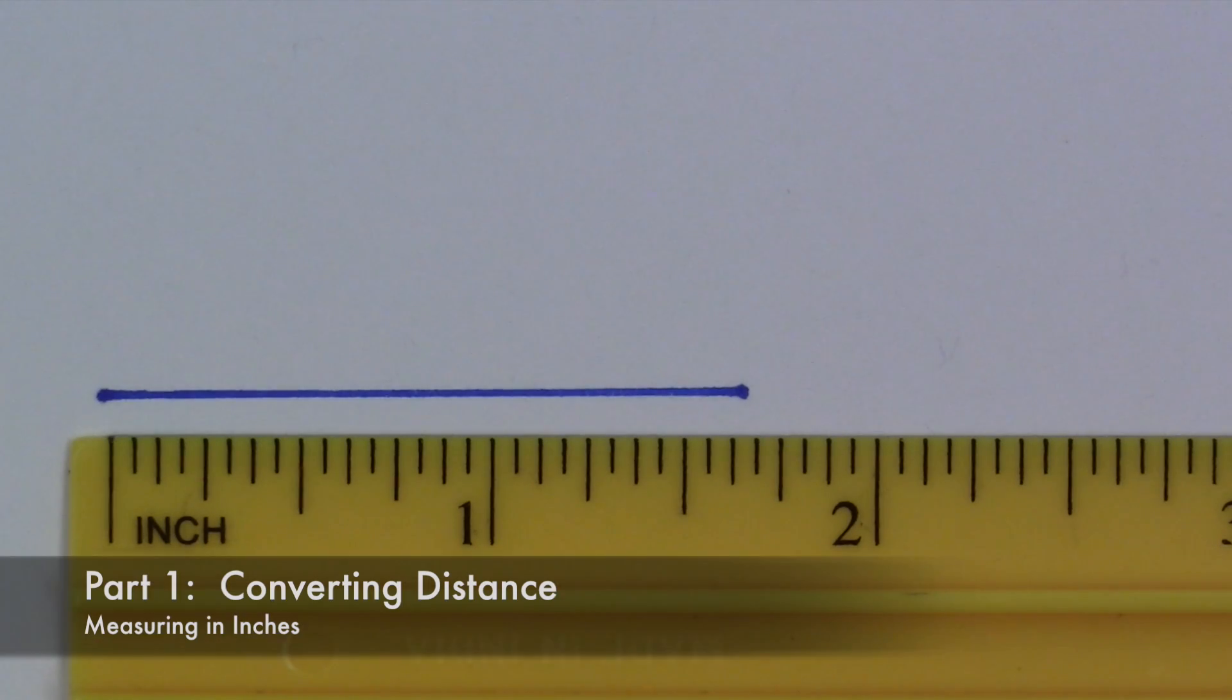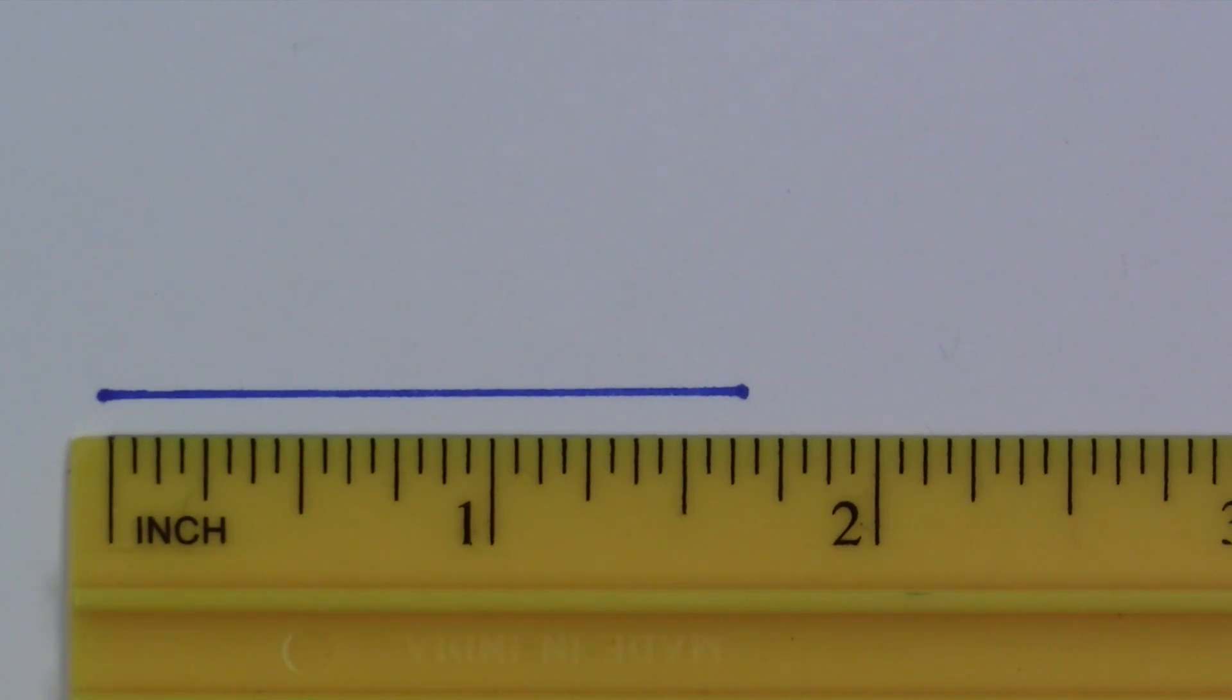In Part 1 of today's experiment, we will be measuring the length of this line in centimeters and in inches. Now, this is only an example of what you'll have to do in the lab. In the lab, on the instructor's bench, you will find a stack of index cards with a line drawn on them and a card number. Write the card number down in your notebook, and then measure the length of the line provided on the card. Do not take the measurements from this video and use them as your own in your textbook.